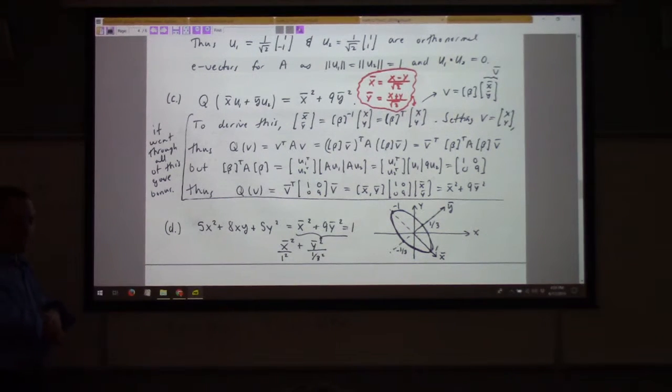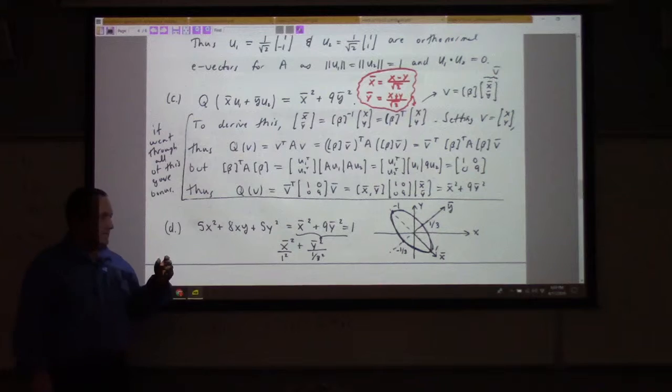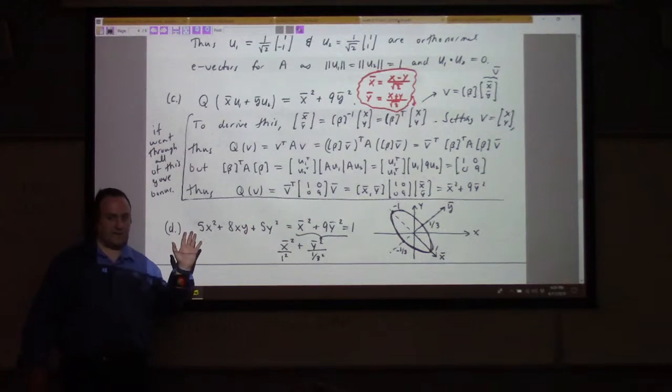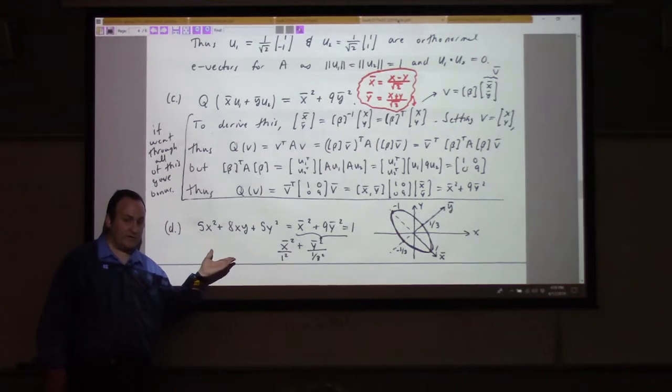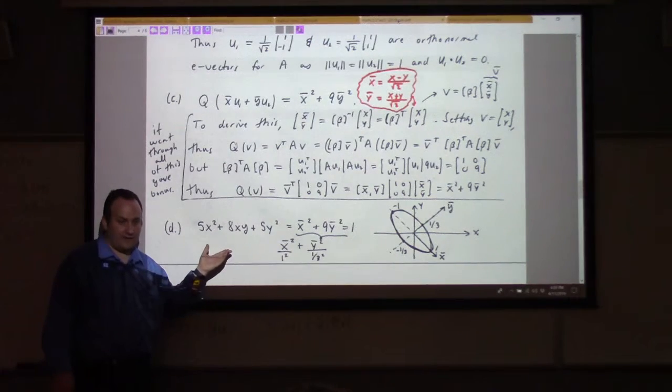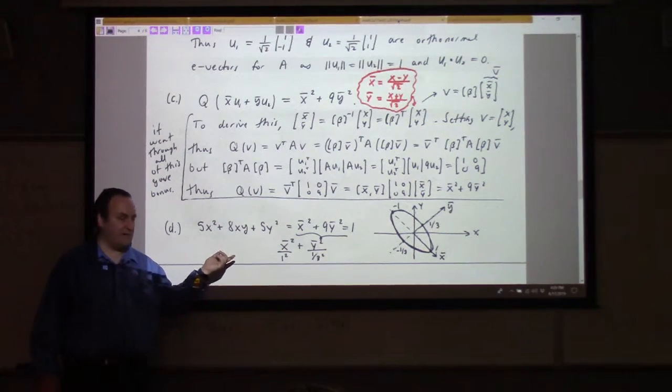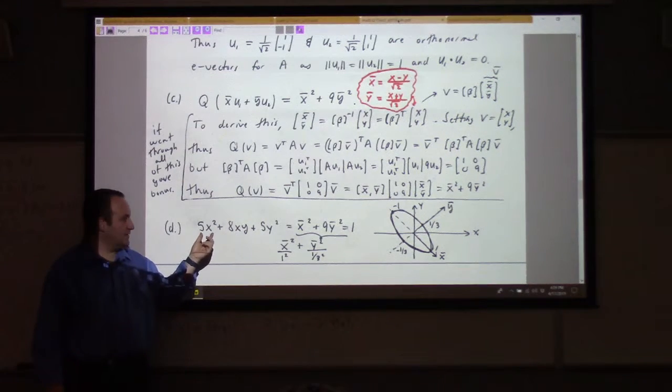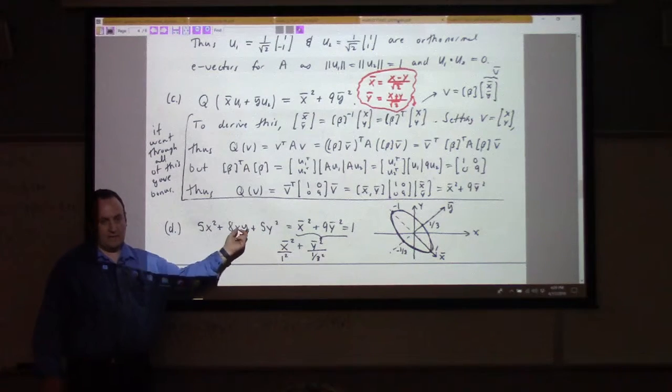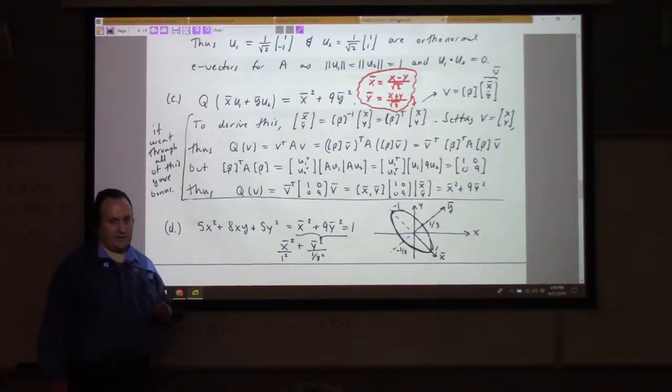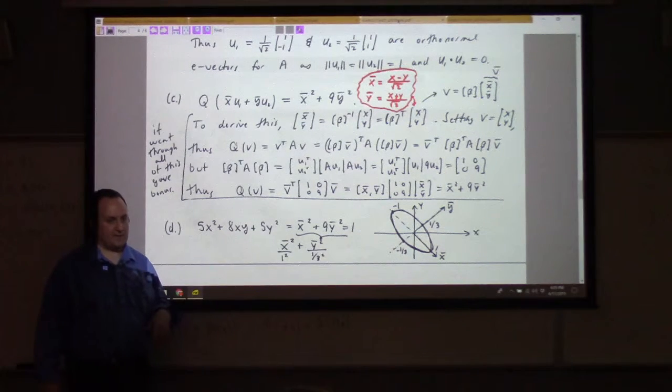If you ever want to teach this to high schoolers without all of the linear algebra stuff, the calculus book which has this in it without linear algebra is Anton. Howard Anton's linear algebra actually has a section on this where he shows how to rotate coordinates just using the coefficients of the original conic section, and how you rotate and what kind it is. He completely black boxes the whole thing. There's no linear algebra required. It's just formulas.